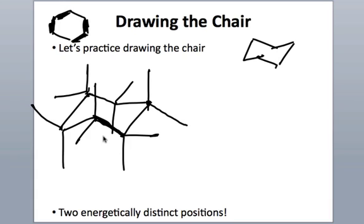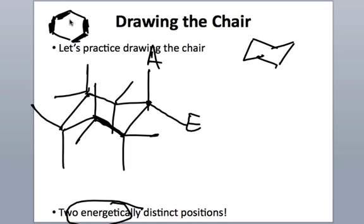Next time, we're going to look at the conformational dynamics of cyclohexane — how it can change, and how this structure undergoes changes in solution to interconvert the axial and equatorial positions, introducing some interesting stereochemistry into the cyclohexane ring. But for now, that's all for today. Thanks for joining us, and I'll see you next time.